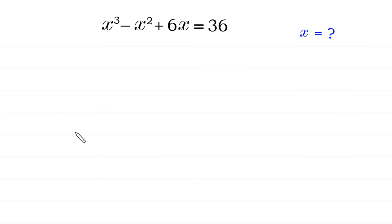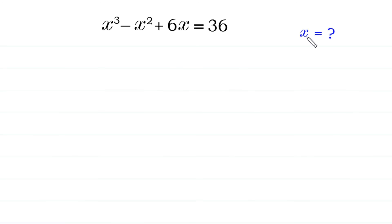Hello, welcome to how to solve this very nice cubic equation. x cubed minus x squared plus 6x is equal to 36, and we need to find all possible values of x. We will solve it by two methods.